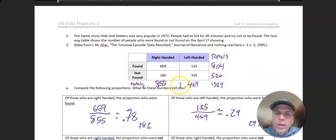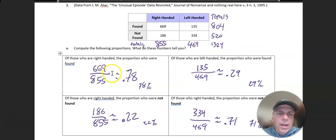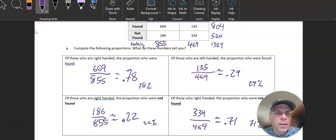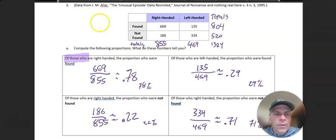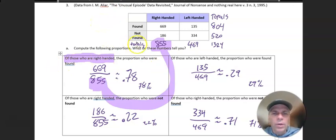First off, you've got to get those row and column totals so you can do all these. And just I'm going to look at answers real quick, but just think when you set these up: of those who are right-handed—so that's telling you all the right-handed people. So of those who are right-handed, that's the total of right-handers. The proportion who were found—